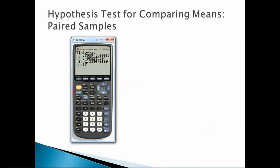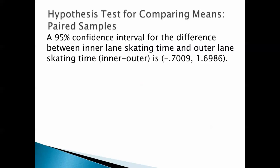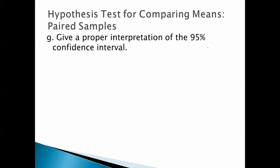Bam, there it is. So there's our t-interval. There's our confidence interval. Very cool. So a 95% confidence interval for the difference between inner lane skating time and outer lane skating time is negative .7009, 1.6986. Very painless.